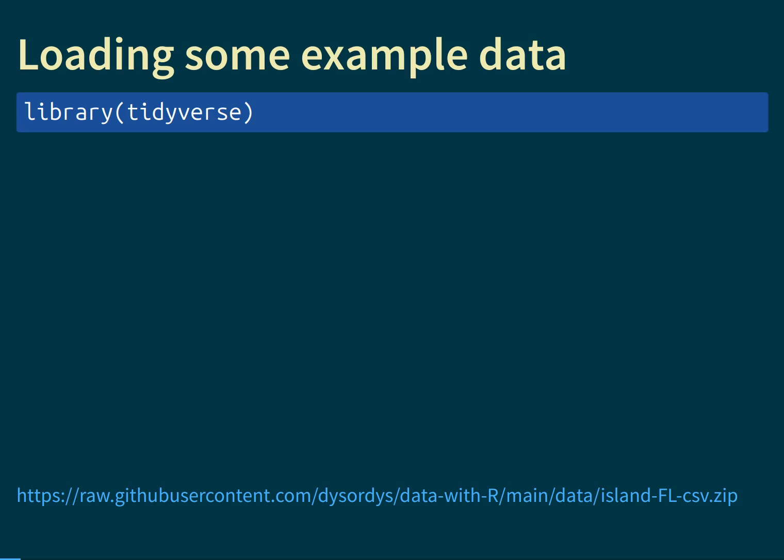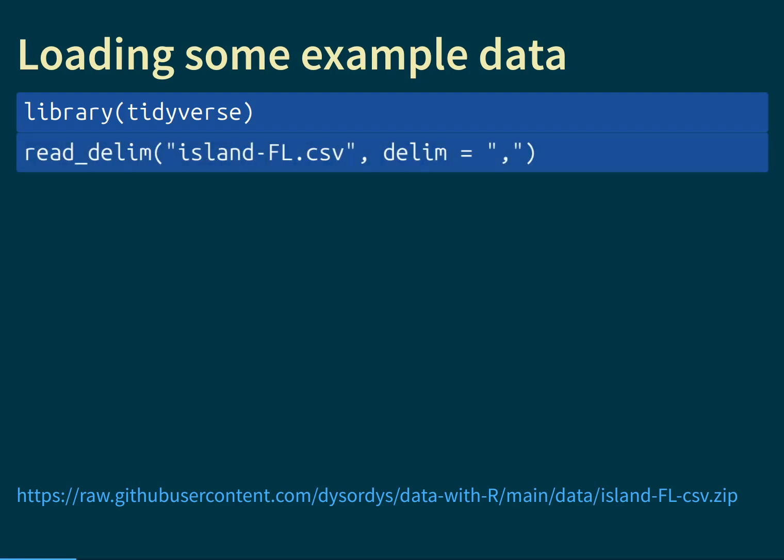To do that, we first invoke the tidyverse with library(tidyverse), because we are going to be using those functionalities. After that, we have access to the read_delim function that will read in the contents of the file. This assumes that the file islandfl.csv is already in our working directory. This is a CSV file, which means the delimiter separating entries in different columns is the comma character — which is why dlim equals comma has been specified here.